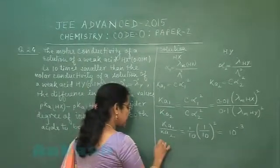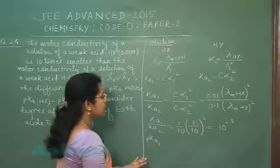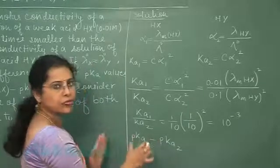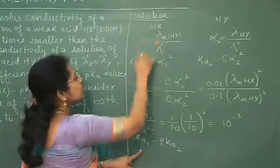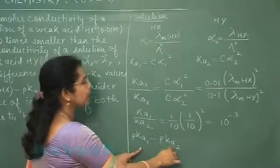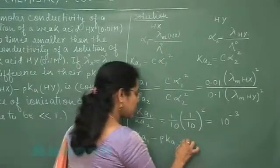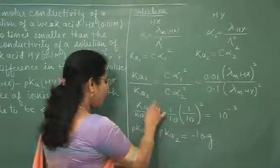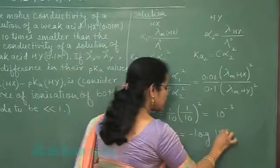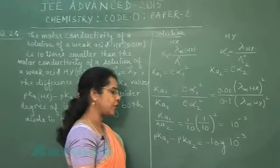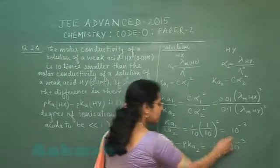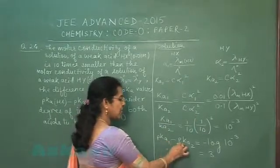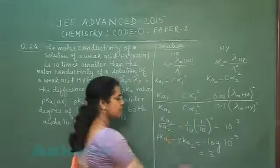अब देखिए इस question में हमें find out करना है difference of pKa1 and pKa2. हमें यह difference find out करना है. Ka1 HY के लिए. So this will be equal to negative log of Ka1 by Ka2. So this is negative log of 10 raised to power minus 3. जब हम इसका negative log लेंगे तो यह value आ रहे है 3.